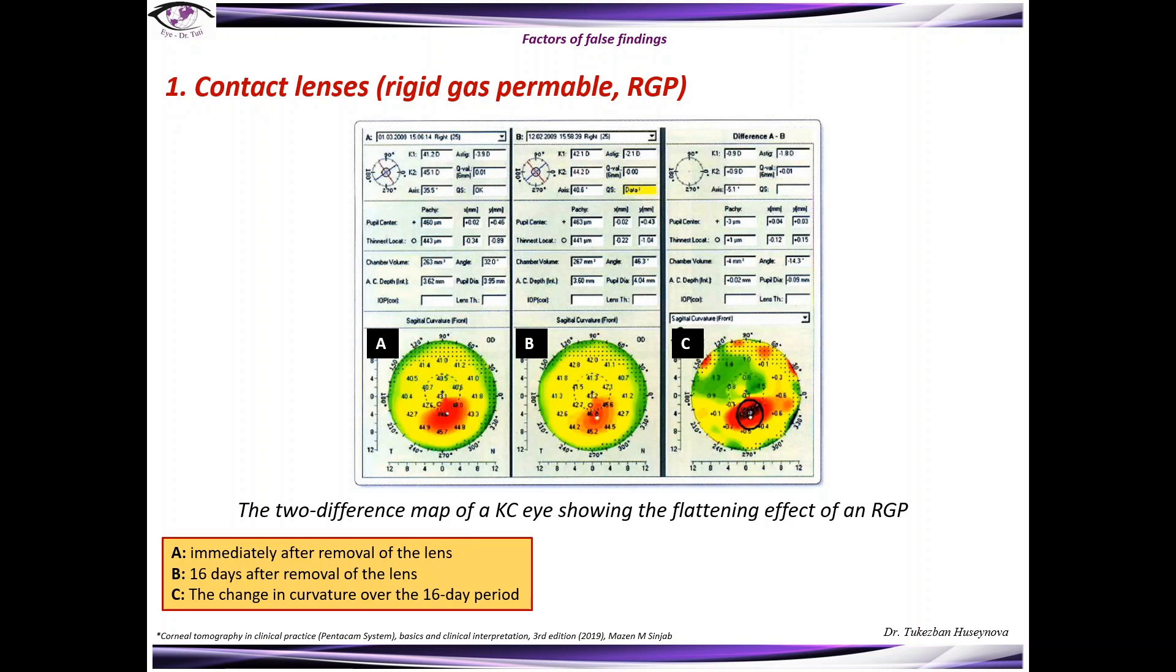This is another sample of a patient using rigid gas permeable contact lenses. Image A is immediately after removal of the lens. Image B shows the change in curvature over the 16-day period.